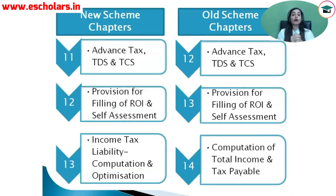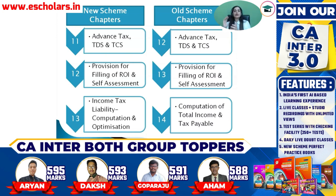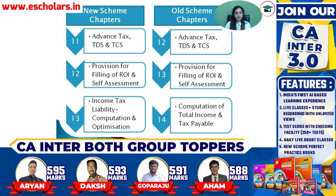In the old scheme, there are three chapters in module 3: advance tax, TDS and TCS; provisions for filing of return of income and self-assessment; and computation of total income and tax payable — so six chapters total in module 3. In the new scheme, module 2's fourth section has advance tax, TDS and TCS, and provisions for filing of return of income. Module 2 ends there, and separately there is a module number 3, which has only one chapter — income tax liability computation and optimization.